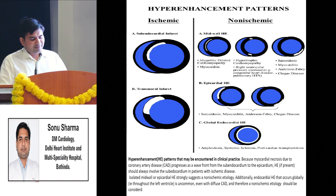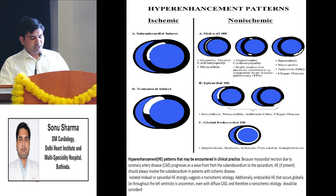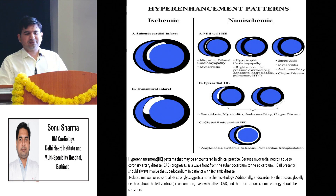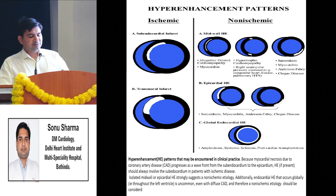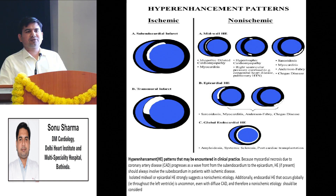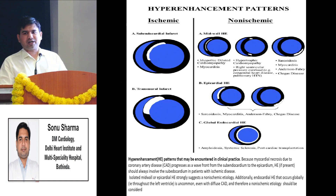An ischemic cause will show sub-endocardial late gadolinium enhancement or transmural gadolinium enhancement on MRI, while non-ischemic causes produce mid-wall enhancement, epicardial enhancement, or global endocardial enhancement. Because once there is coronary artery blockage, ischemia travels from endocardium towards the epicardium, so coronary artery disease produces only sub-endocardial or transmural infarct - it cannot be a global endocardial infarct.